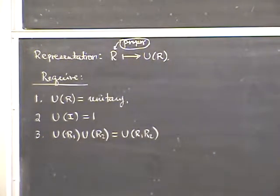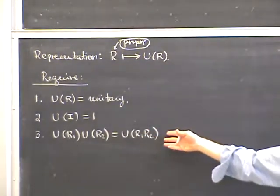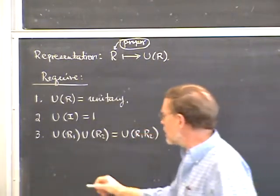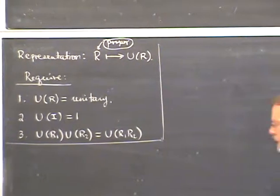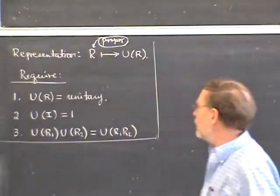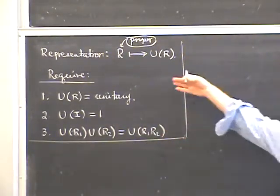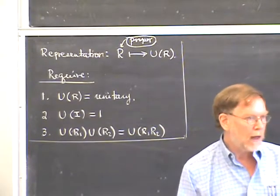We require that these operators U should satisfy three properties. First, they should be unitary. Second, the U operator corresponding to the identity rotation should be the identity operator. Third, the U operator should reproduce the multiplication law of the classical rotations. There's a lot about these U operators that can be derived independent of the specific nature of the system — whether it's a spin system or relativistic quantum field theory — dependent only on these representation requirements.